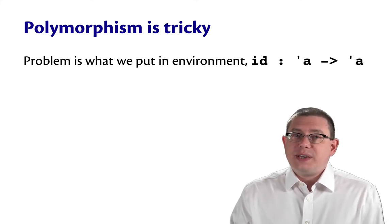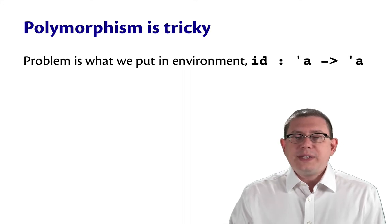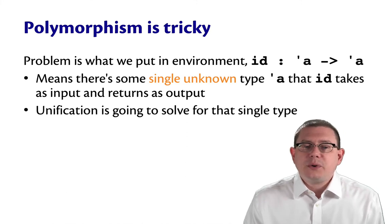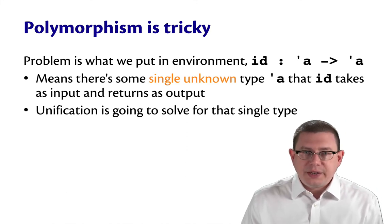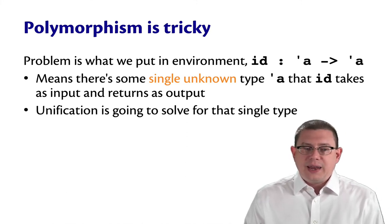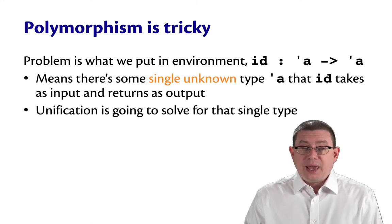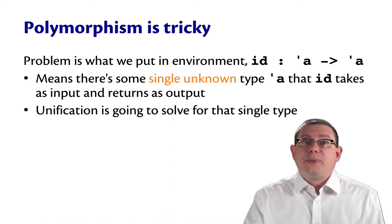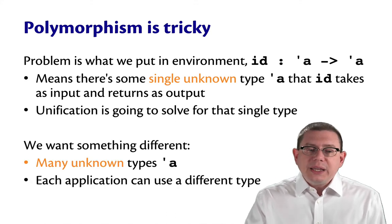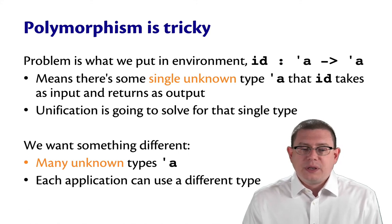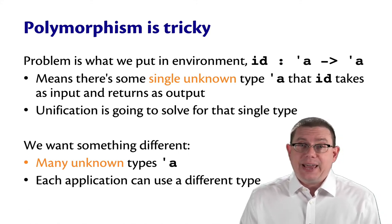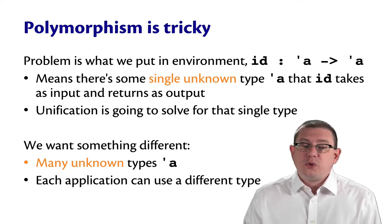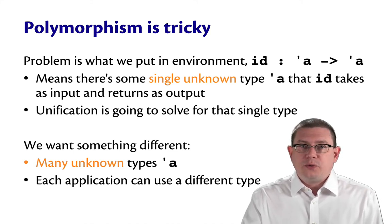So what went wrong here actually is something that is so subtle that it seems right when you first see it. The problem is what we put in the environment. We said that id has type alpha arrow alpha. It means that there is a single unknown type alpha that id takes as input and returns as output. And unification then will, of course, go ahead and solve for that single type. But really what we wanted was something different. We wanted there to be many unknown types alpha. And every application of id ought to be able to use a different value for that type.